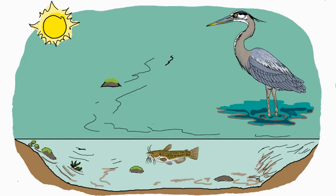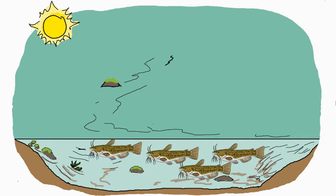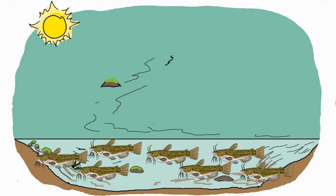Let's say this pond has low biodiversity and the great blue heron is the only fish-eating predator. What would happen if a disease wiped out all the heron? With no heron to eat the fish, the fish population would become huge. With so many fish in the pond, all the aquatic plant life would get eaten. This means lots and lots of hungry fish and very little to eat.